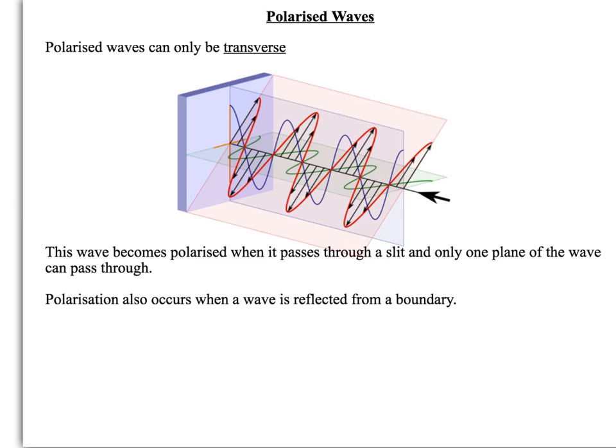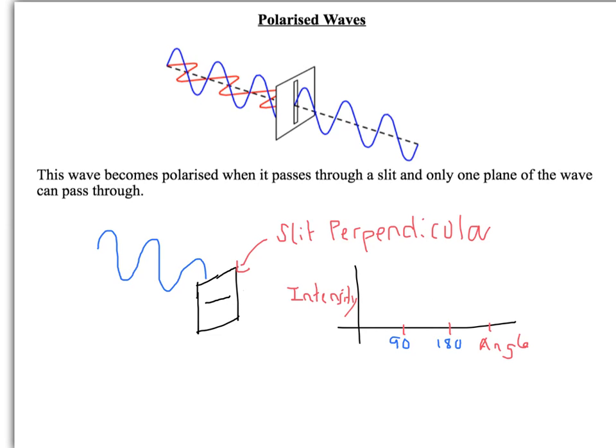One of the ways you can get a polarized wave is by reflecting it off a boundary. The other way, which I'm going to look at in more detail, is to pass it through a slit. If we look here at the top, we've got this signal that's made up of this blue and this red transverse wave. You can see we're passing it through a slit that's in the same plane as the blue wave. So the red wave doesn't make it through, it's filtered out, but this blue one does. So this wave has now become polarized because it's only in one plane. That's what a polarized wave is.